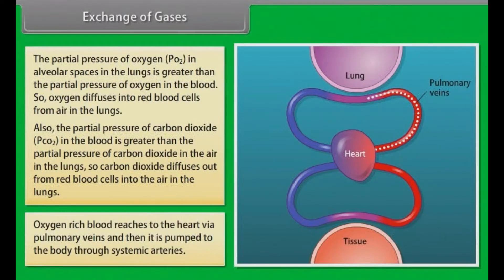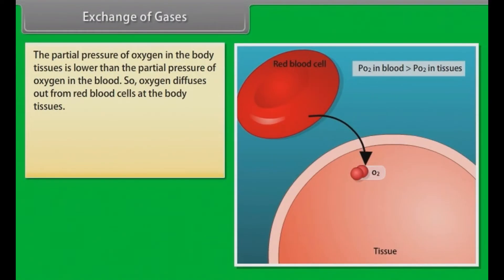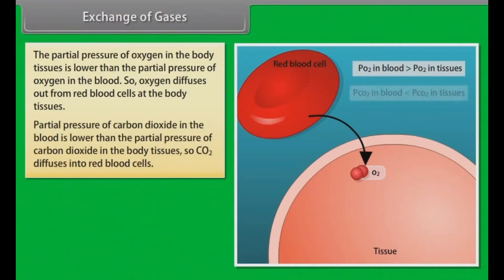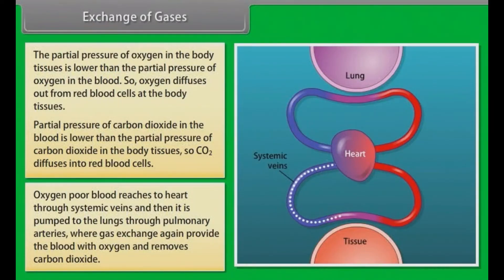Oxygen-rich blood reaches the heart via pulmonary veins and is then pumped to the body through systemic arteries. The partial pressure of oxygen in the body tissues is lower than in the blood, so oxygen diffuses out from red blood cells at the body tissues. The partial pressure of carbon dioxide in the blood is lower than in the body tissues, so CO2 diffuses into red blood cells. Oxygen-poor blood reaches the heart through systemic veins and is pumped to the lungs through pulmonary arteries, where gas exchange again provides the blood with oxygen and removes carbon dioxide.